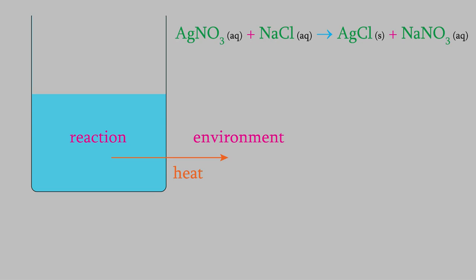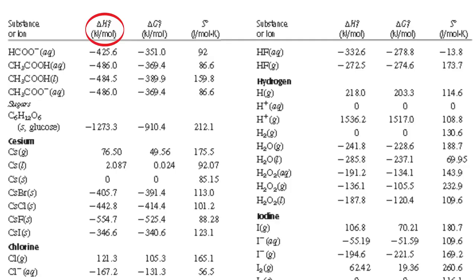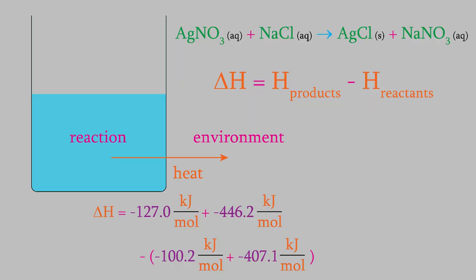Remember, this time we look up the enthalpy in the appendix, which is in the first column. When we do, we get this equation. That gives us an enthalpy of negative 65.9 kilojoules per mole. Notice that this is a negative number, so that means this is an exothermic reaction. So the reaction does release heat, which is what makes it possible for the reaction to occur, even though the entropy decreases.